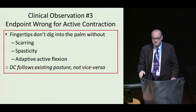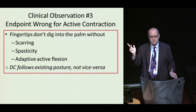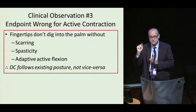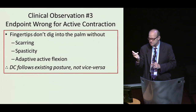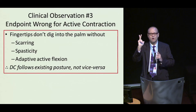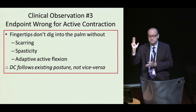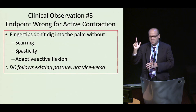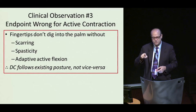Third clinical observation is that the endpoint is wrong. Active contraction should take a straight finger, pull it bent, and ultimately the fingertips would dig into the palm. You do see people with Dupuytren disease where fingertips are brought into the palm, but they only dig in if something additional is going on — either spasticity, often undiagnosed, or scar tissue from previous injury or surgery, or people with a tubie on four who have cortical reorganization allowing active flexion. So the contracture follows the posture, not vice versa.